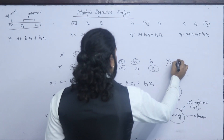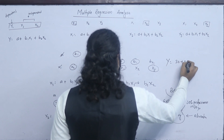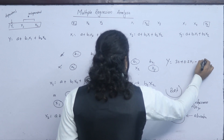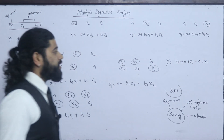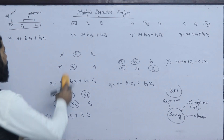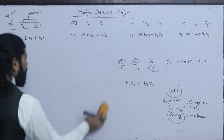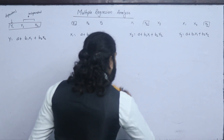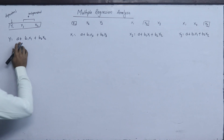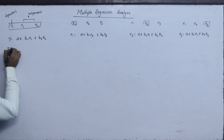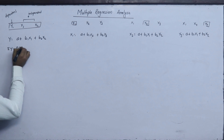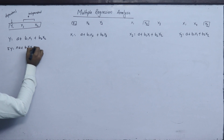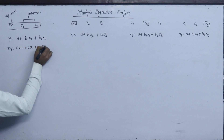The equation is y equals to 30 plus 0.2 x1 minus 0.5 x2. This is a type of equation. The equation means finding a, b1, and b2. We have a condition: summation y equals to n·a plus b1 summation x1 plus b2 summation x2.